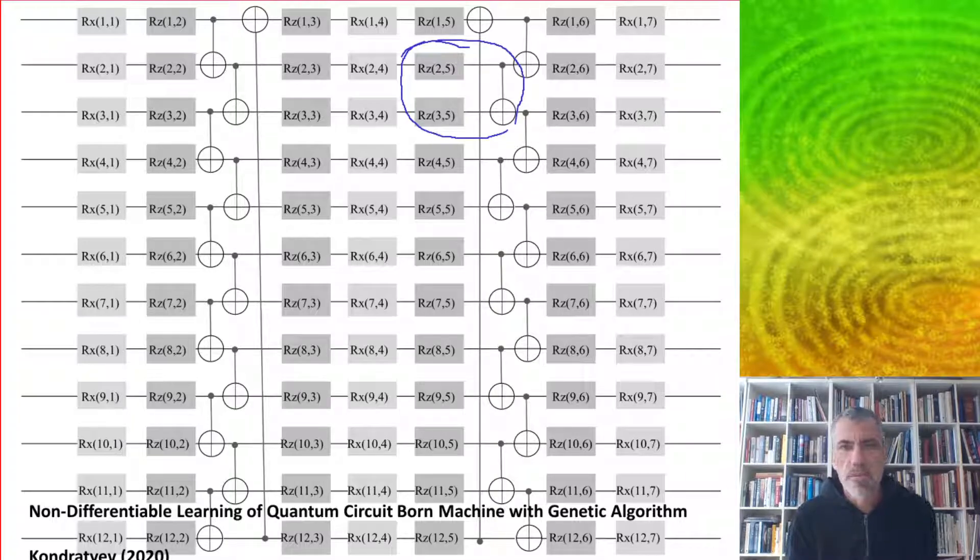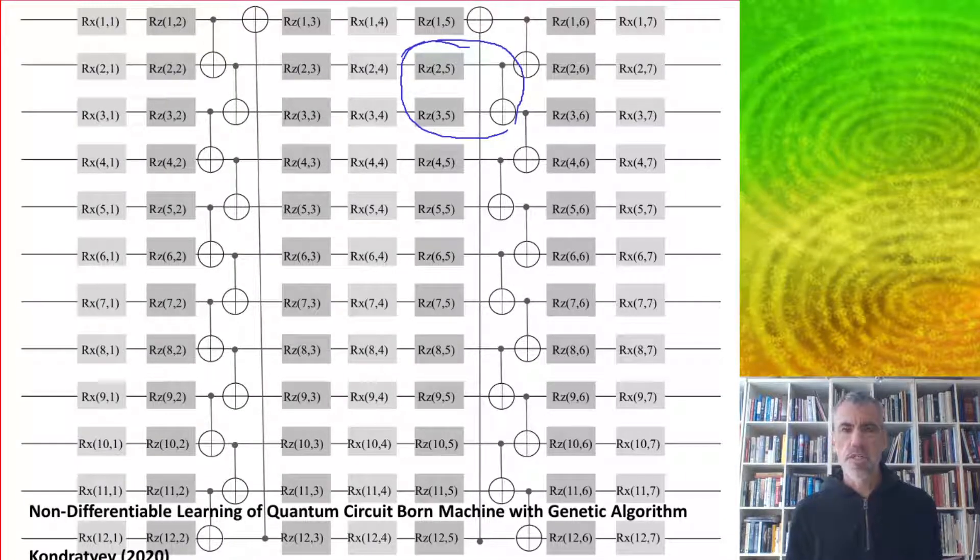We've got like two qubits and gates acting on each one and then a CNOT gate which is entangling them. This is not for quantum cognition as such, it's actually for a genetic algorithm used in a quantum machine learning algorithm. It's interesting to see that the basics, the core of quantum cognition, are appearing in the core of quantum machine learning algorithms.